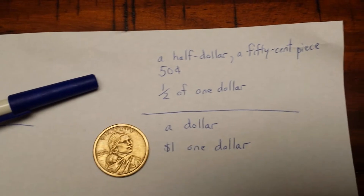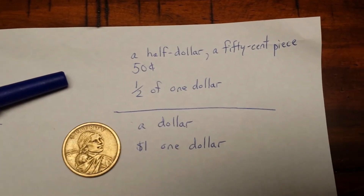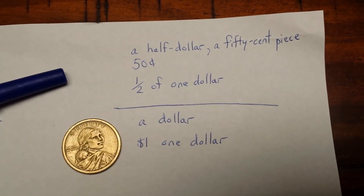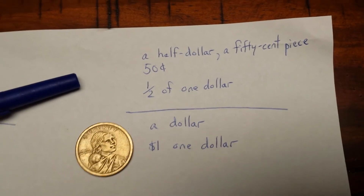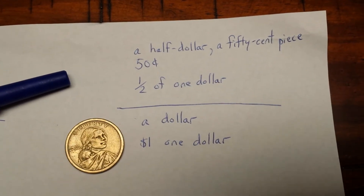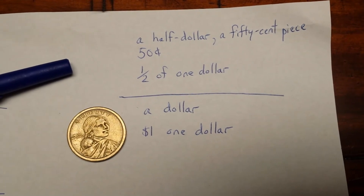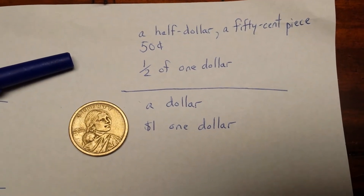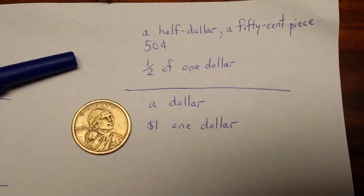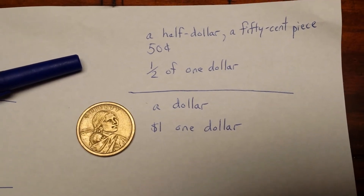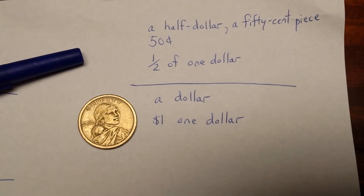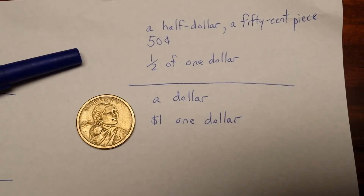The half dollar or fifty-cent piece is next. It is also called fifty cents. It is worth one-half of a dollar. I don't have an example of this one. You can get one if you request it at the bank, but it's not normally used in circulation. I haven't seen one in many, many years. So we don't normally see them, but you can get one from the bank if you want.